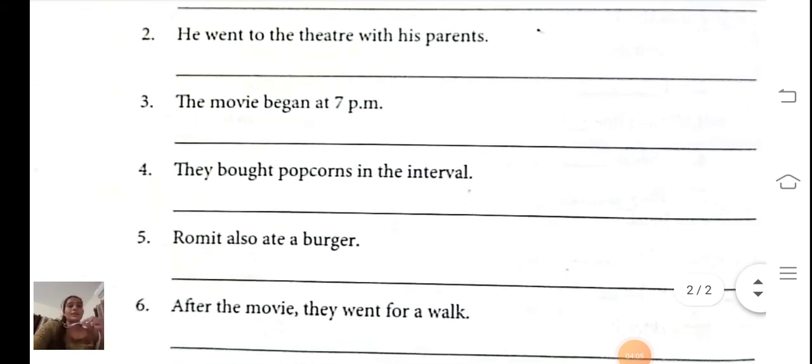Now the next. They bought popcorn in the interval. So they will buy. Root form of bought is buy. They will buy popcorn in the interval.